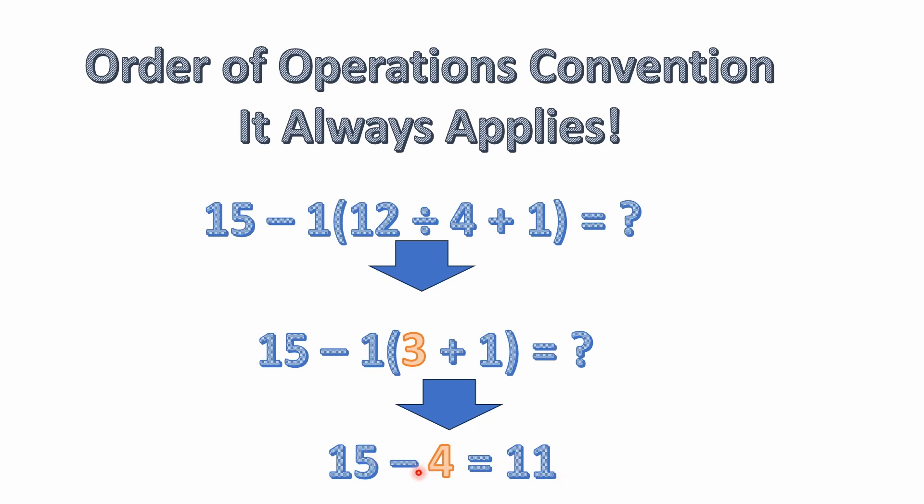11 is the correct answer. You can confirm that on your cell phone calculator, the scientific mode on Windows, or a scientific calculator. Any calculator capable of handling multiple operations will give you 11. You have to be careful because cheap calculators without memory solve using immediate execution and are not capable of doing order of operations.